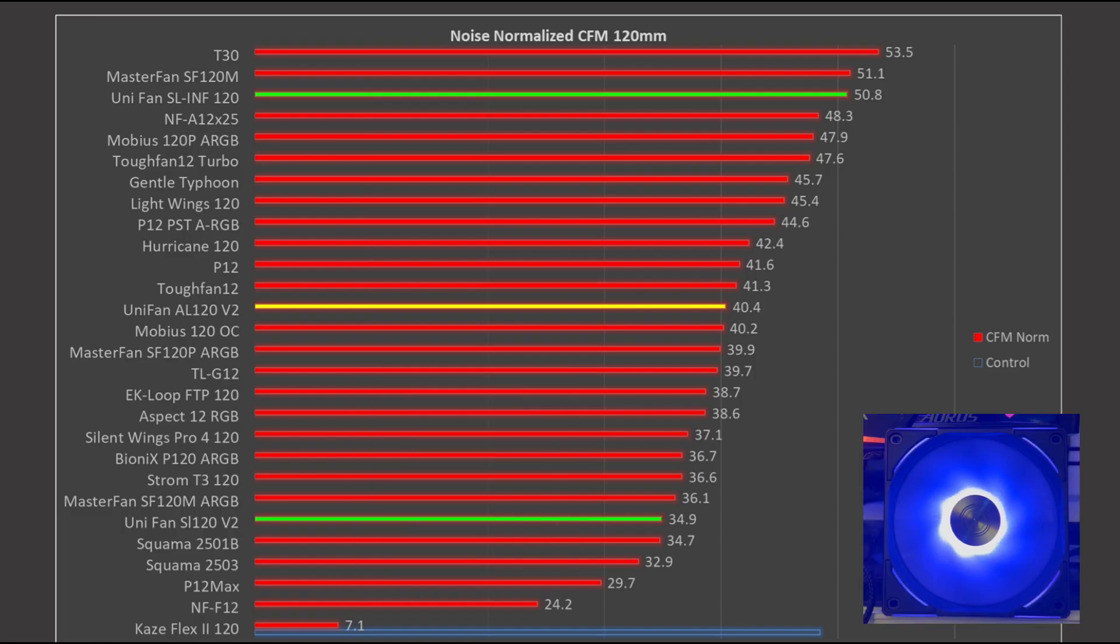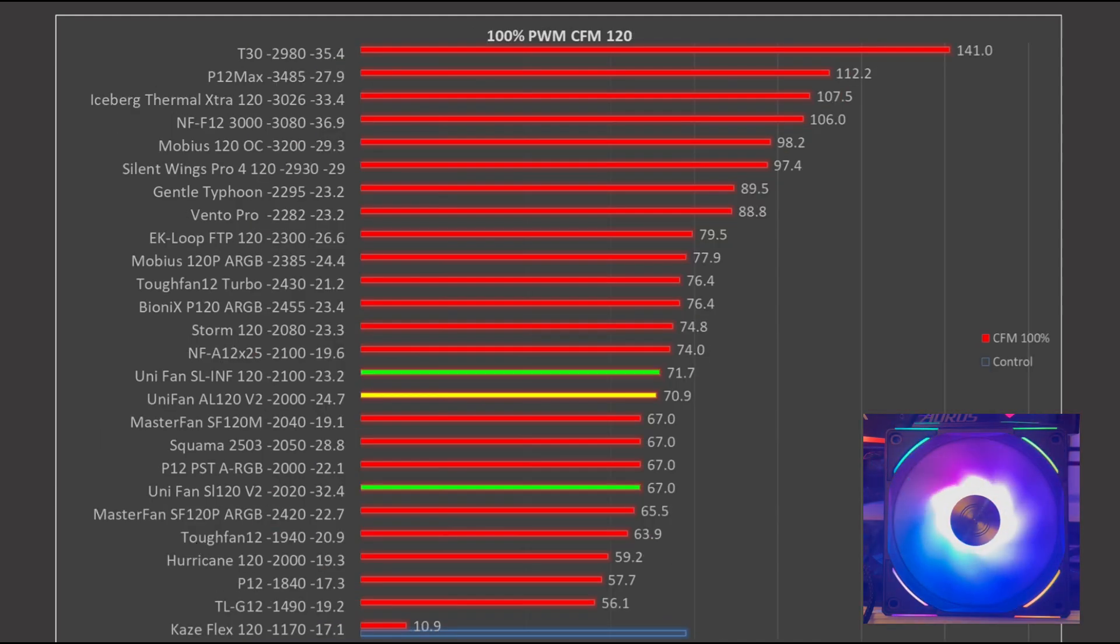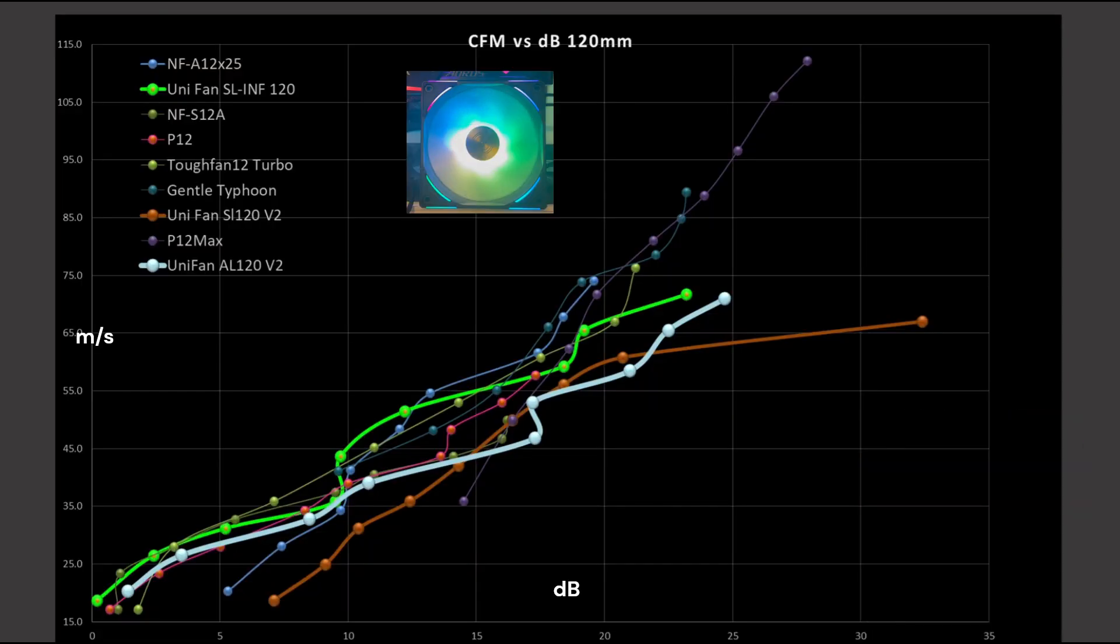How about comparing to other fans? Well, here the Infinity is doing really well. The AL120 is middle of the pack, and the SL120 is at the bottom of the pack. And at 100% PWM fan signaling, the AL is pretty much in the middle of the graphs. So it's not a bad result, but it's in the middle of the graphs. And for point of reference, here's the A12X25, which is largely considered the best all-around fan. So its performance isn't that far off of the A12X25 at 100% PWM fan signaling.